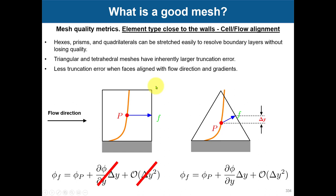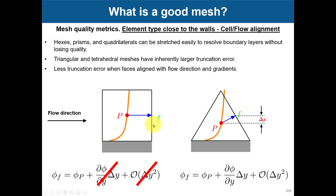Another factor to consider from time to time is cell alignment with the flow. When the flow is aligned with hexa cells the truncation errors are very low because the cell center aligns with the face center. If the flow direction changes, the truncation error shifts. So hexa cells are not always ideal depending on flow direction. If you can align the cells with your flow it is strongly recommended, but sometimes it's impossible, so don't think too much about this — it's just general information.